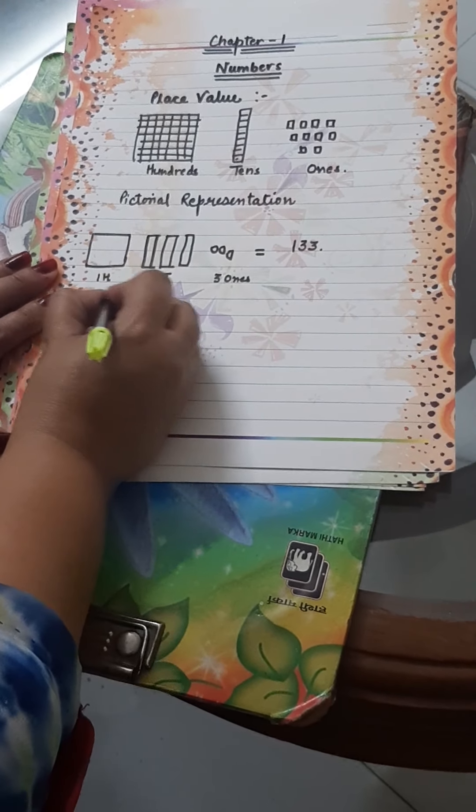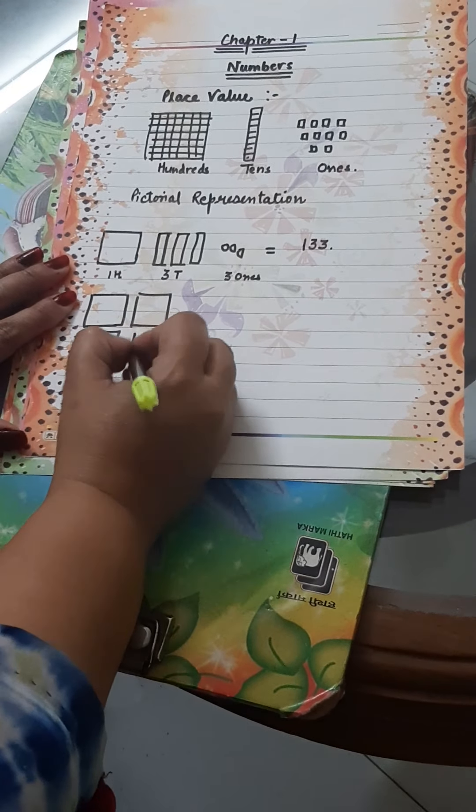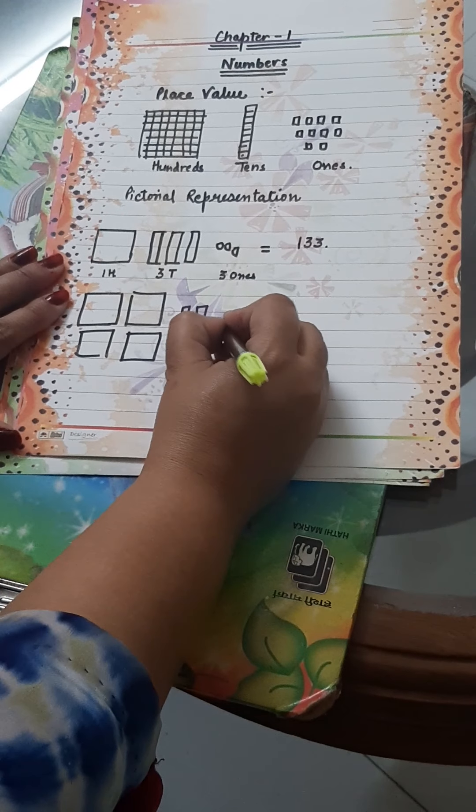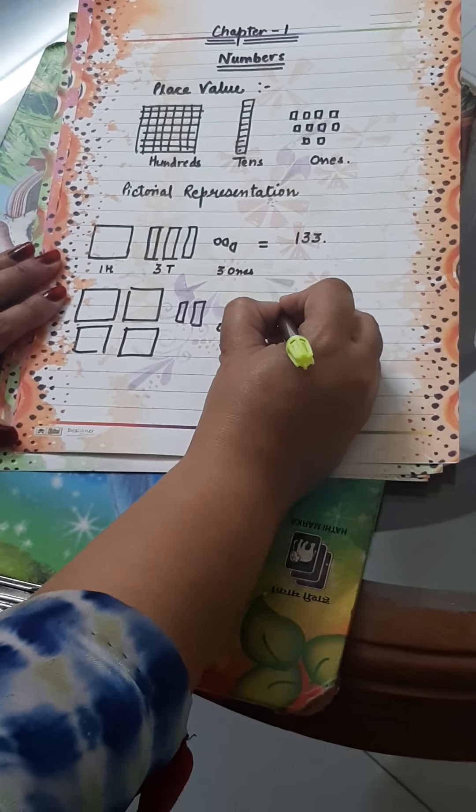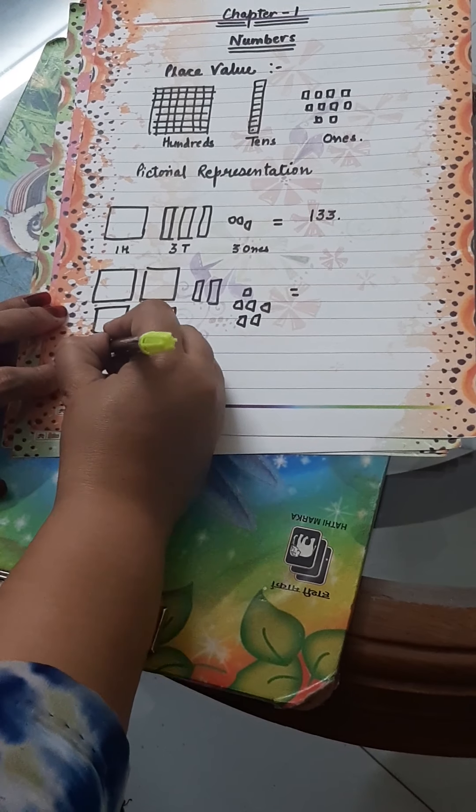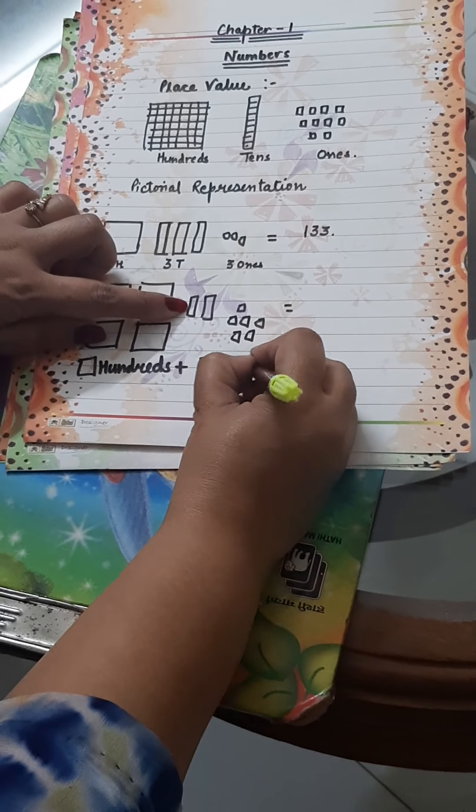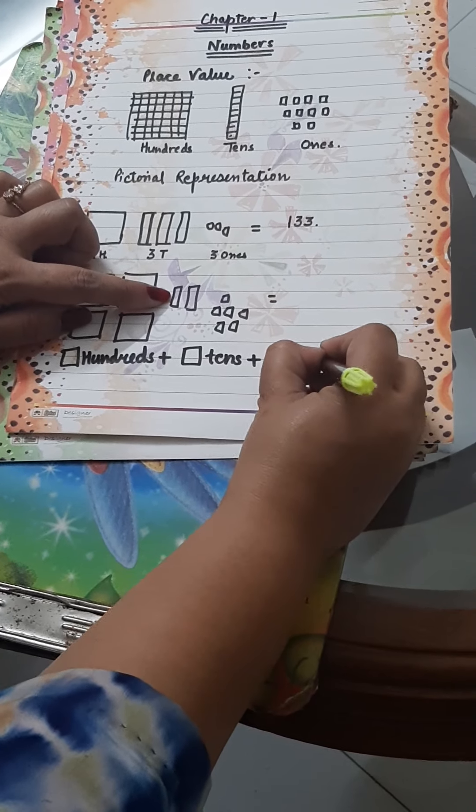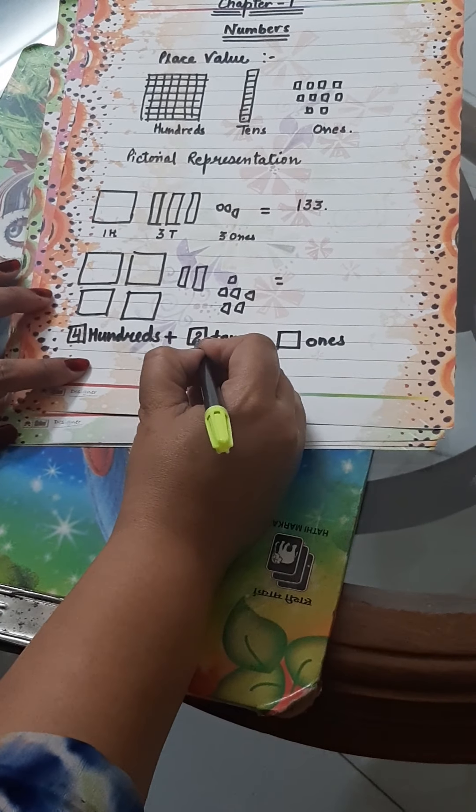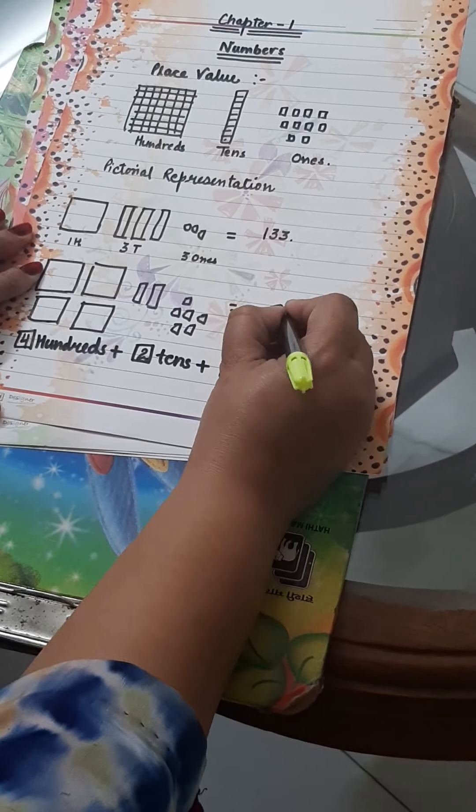Another example. I am having 4 hundreds, 20, 6. How will you know it? How many hundreds? This is dash hundreds plus dash tens plus dash ones. Let us solve the number. How many hundreds? 4 hundreds, 2 tens and 6 ones. We will write the number as 426.